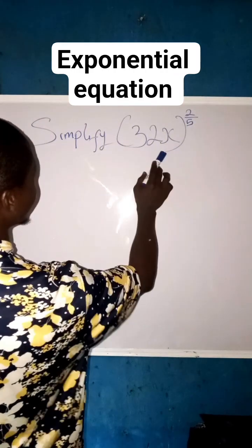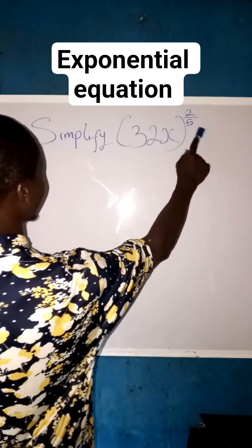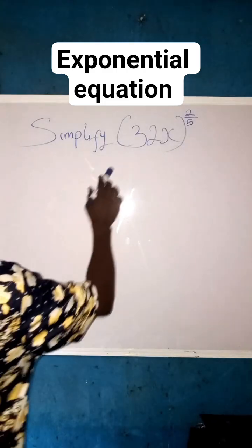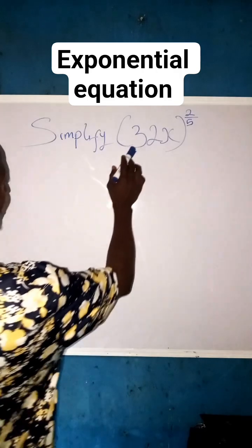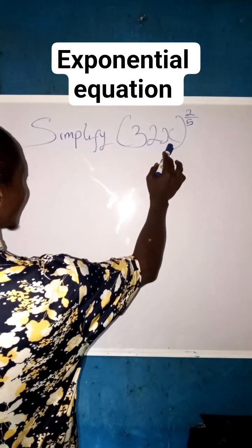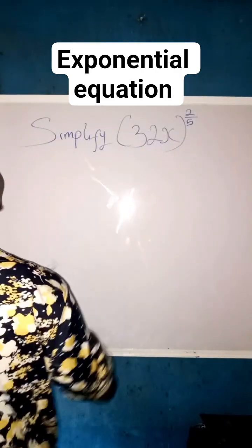Simplify (32x)^(2/5). What we are going to do here first of all, we are asked to make it simple. We can see that here is 32 and here is x. But let us check this 32.